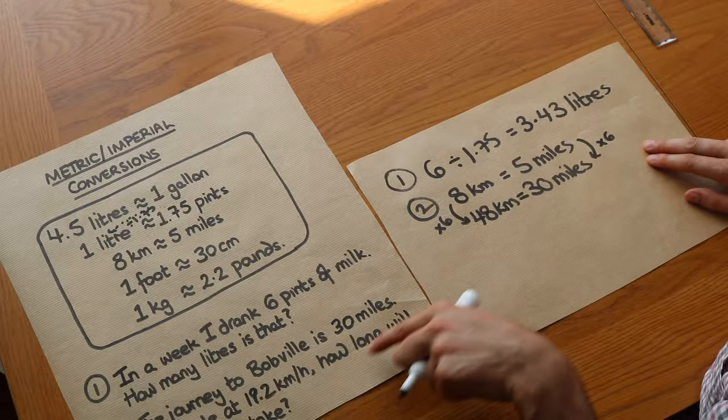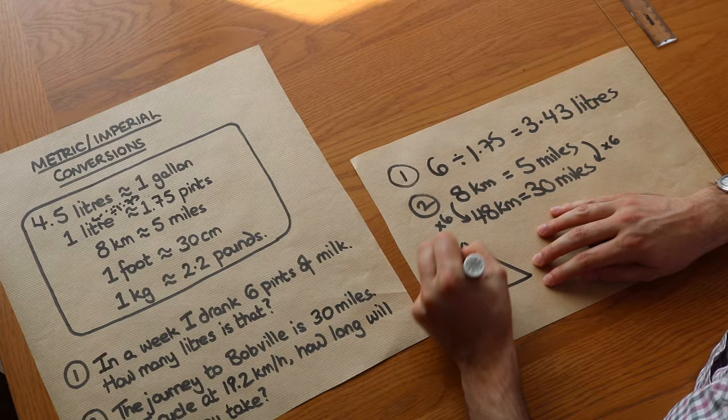So we know that we need to travel 48 kilometres to get to Bobville, and then we need to work out how much time. So it's a speed distance time problem. Let's remember our speed distance time triangle.